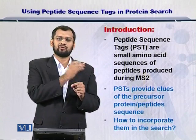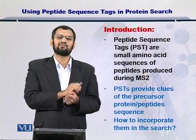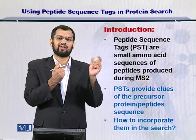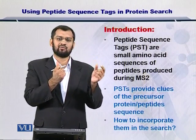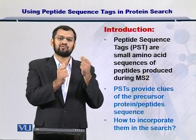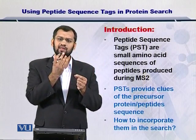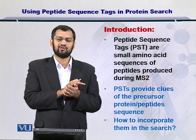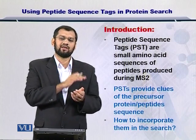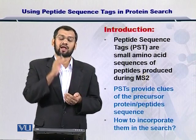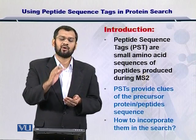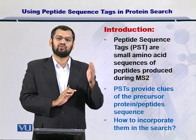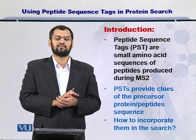You store that protein and go back to the database. You take the next protein and repeat the same process — scan the peptide sequence tag from the sequence of this protein. If it also reports the peptide sequence tag, you add it to the candidate protein list as well. And you continue processing the entire protein sequence database to search for these clues.